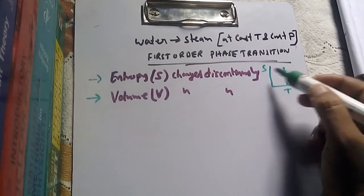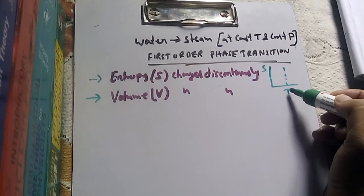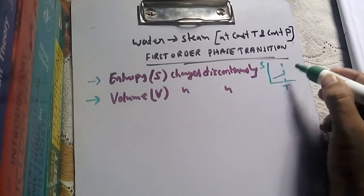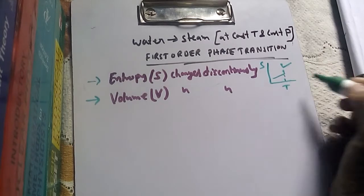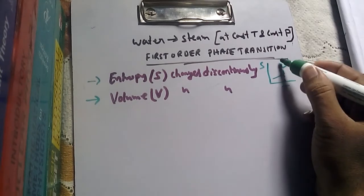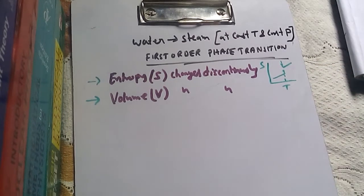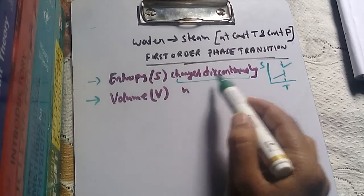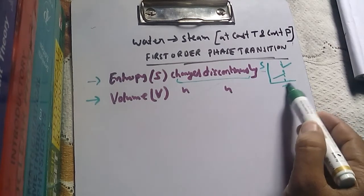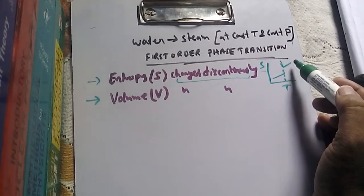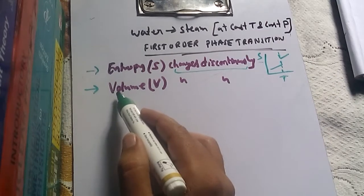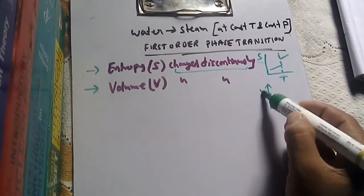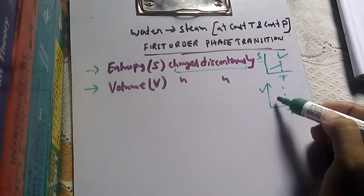Changing discontinuously refers to the graph of entropy versus temperature. Always remember: if we draw a graph of entropy versus temperature, with temperature on the x-axis, it will show a discontinuous change at the transition point. Similarly, if volume changes discontinuously, a graph of volume versus temperature will also show a discontinuous change at the transition point.